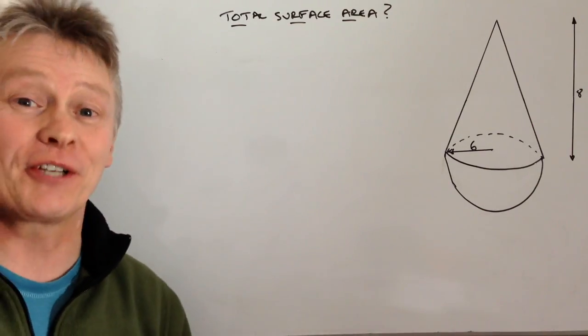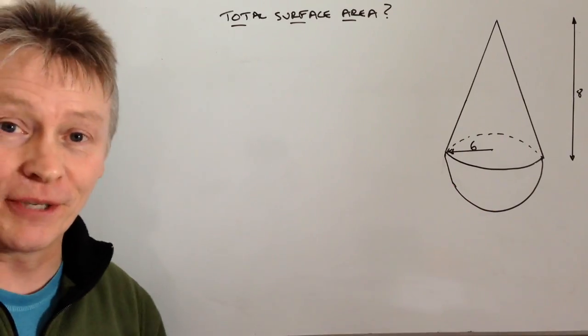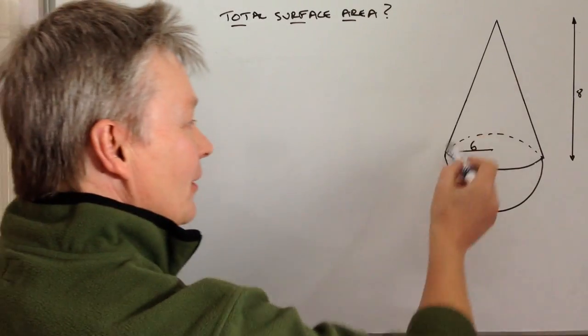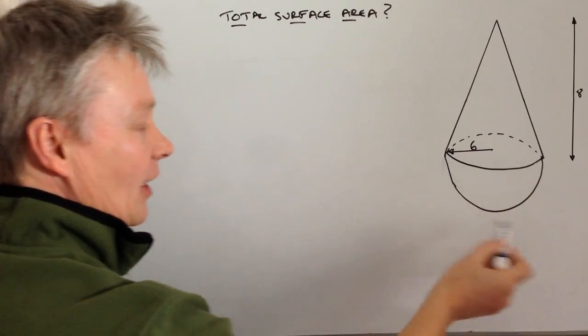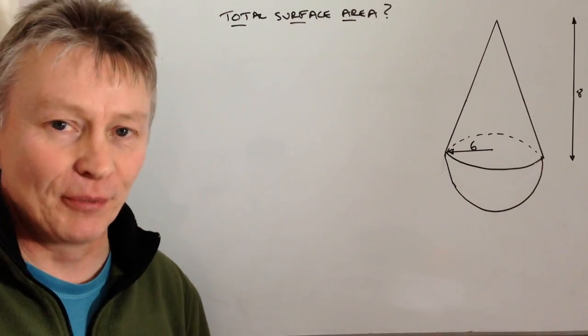Unfortunately I haven't got anything I could show you, but if you can imagine an ice cream cornet made up of a cone at the top here and then a ball at the bottom here, or at least half a ball.